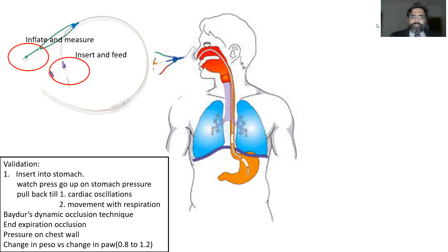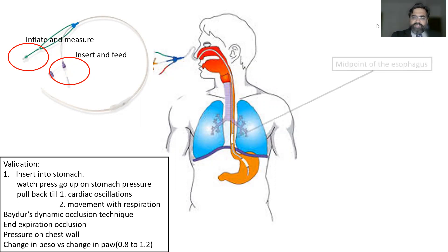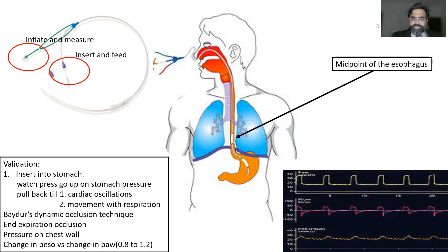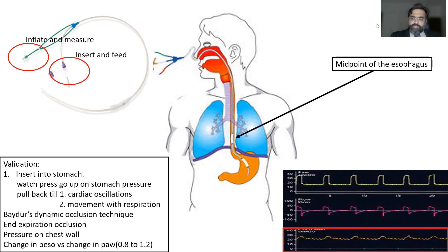Just as we pass a Ryle's tube, we pass this catheter inside. The esophageal balloon lies toward the distal end. As we insert into the stomach, we attach the device to the monitor and watch the pressures rise when we press on the stomach — confirming the balloon is in the stomach. We then pull back until we get cardiac oscillations, because we need the balloon at the midpoint of the esophagus, which is close to the heart. As the lung inflates and deflates, pressures rise and fall — this is the characteristic esophageal pressure waveform.